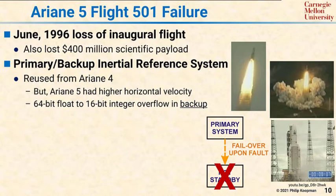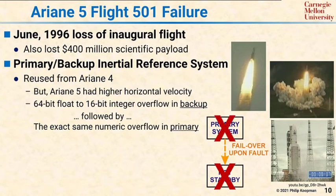The problem is that the primary system was in the same rocket, so it was seeing a high horizontal velocity. And sure enough, the primary system also saw the overflow and shut down. So now we had a primary-standby system where the standby had gone bad, the primary didn't realize it, and then when the primary shut down thinking there was a standby, there was nothing left to steer the rocket.